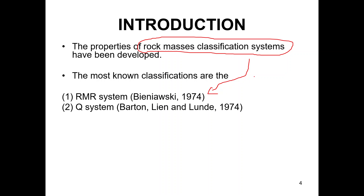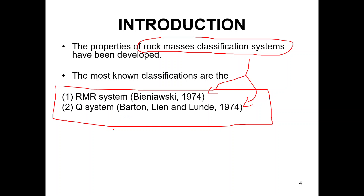There are many types of rock mass classification systems, but for English-speaking countries — normally Europe and Australia — they use the RMR system or the Q system developed by Barton in 1974. These systems have been continuously upgraded to make them suitable to current situations.